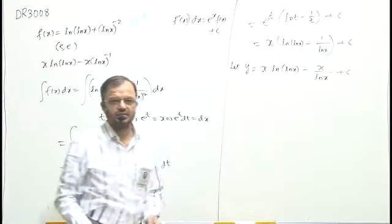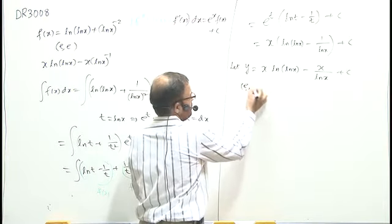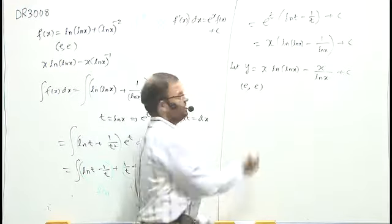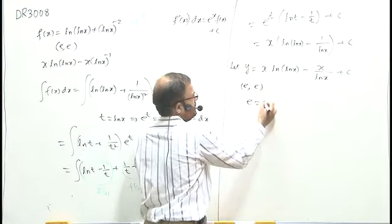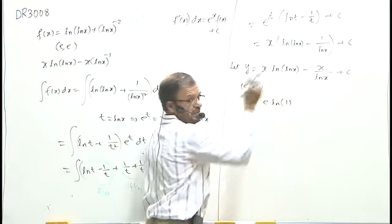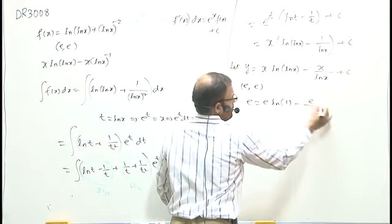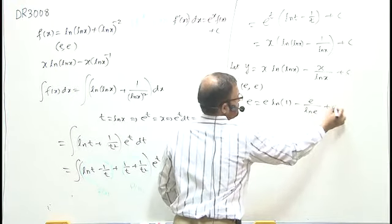This anti-derivative should pass through the point e comma e. I write here, it is e comma e. If I substitute, left side, this will become e. Right side, it is e times ln of ln e. ln e, the value is 1. It is 1 here. Next, e upon ln e plus c.